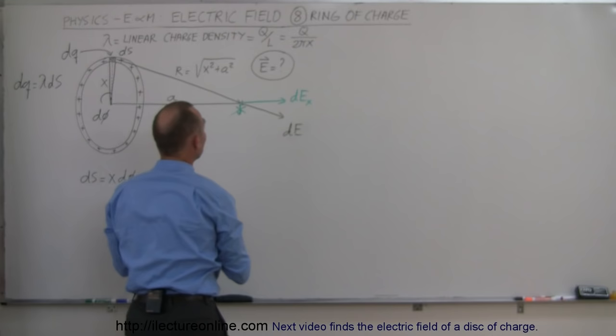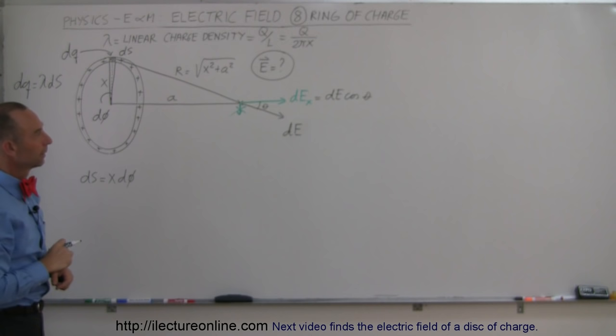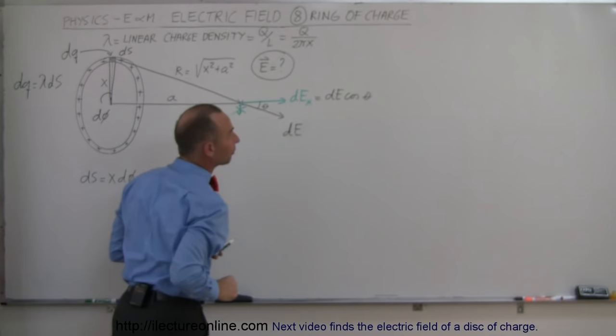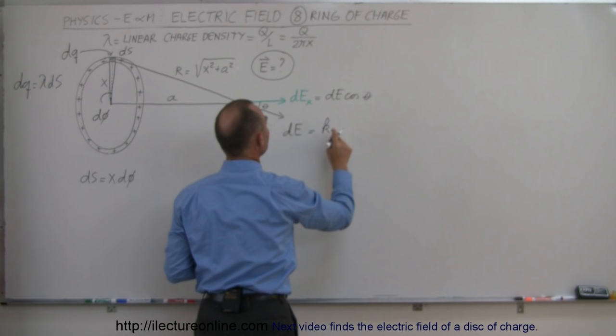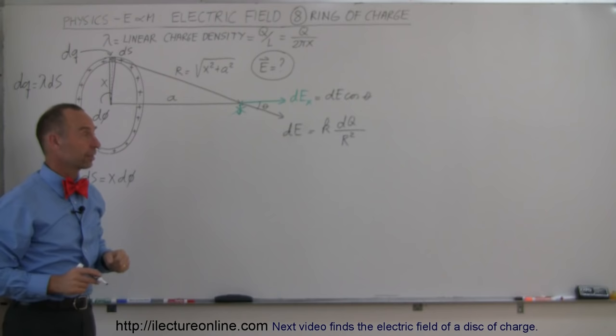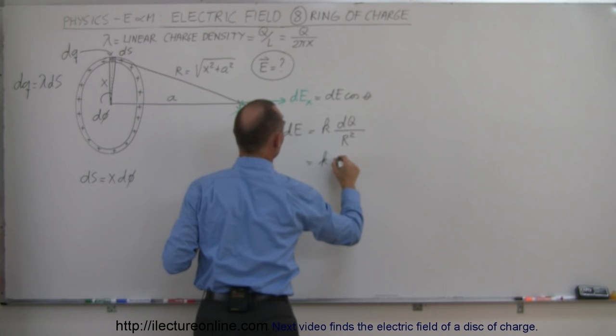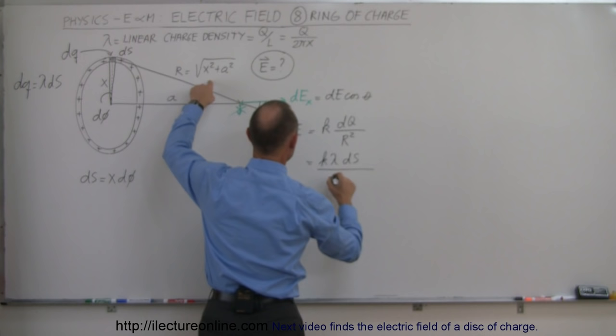We have an angle θ here, and I can say that dEₓ equals dE times cosθ. The magnitude of dE equals k times the charge causing the field divided by the distance squared from the point of interest to that charge. Since r² equals x² plus a², we can write dE equals k times dq divided by (x² + a²), and since dq equals λ ds, we have dE equals k λ ds divided by (x² + a²).